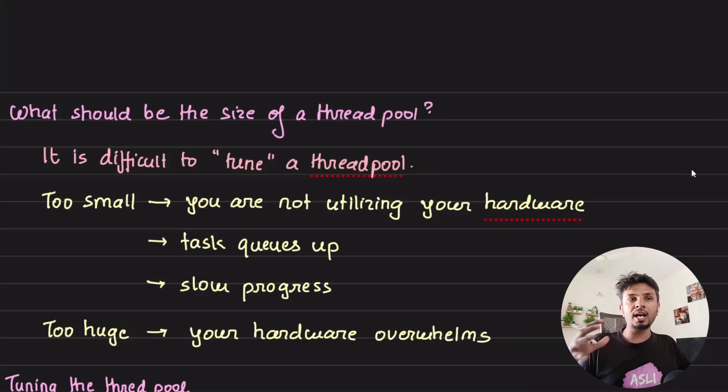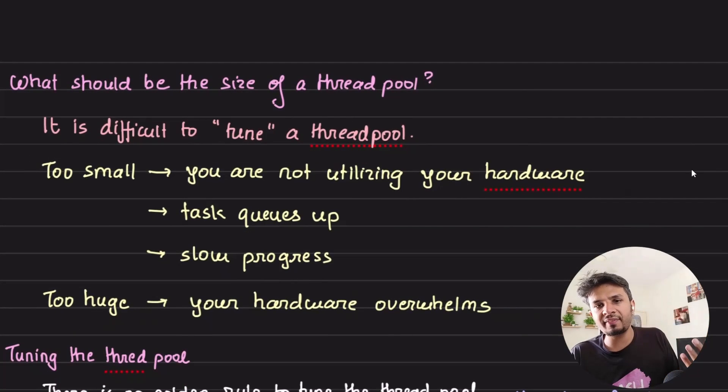If it's too large, your hardware overwhelms. You can do lazy eviction or lazy termination of threads, but you should not have a very large or very small thread pool size. It totally depends on the use case and the underlying hardware configuration.